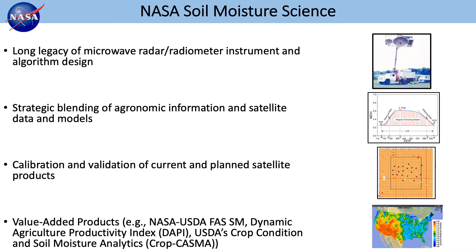This leads to value-added products. The key is to strategically apply and merge these with a land surface model, crop growth model, or soil moisture model so you can improve and constrain those models from frequent satellite observations. From that you're able to have more informed information, such as the Dynamic Agriculture and Productivity Index or DAPI — a partnership with the National Agricultural Statistical Service and the Foreign Agricultural Service — as well as USDA's Crop Condition and Soil Moisture Analytics, or CropCASMA product.